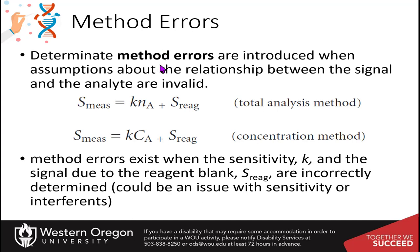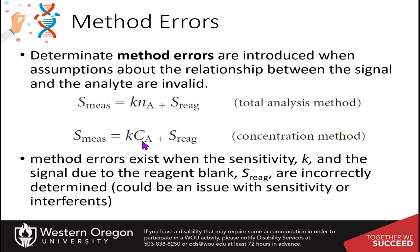Determinant method errors are introduced when your assumption about the relationship between the signal and the analyte is not valid. The reagent blank gives some of the signal in the sample, and if it is determined incorrectly, it affects your calculation of the total amount or concentration of your unknown.